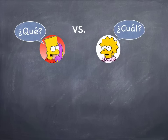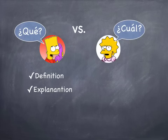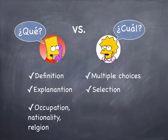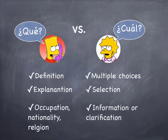In summary, Qué is used when you want to ask about a definition or an explanation, or when you want to ask about an occupation, nationality, or religion. Cuál is used when you have an answer with multiple choices, when you want to ask for a selection, or when you want to ask for information or clarification.